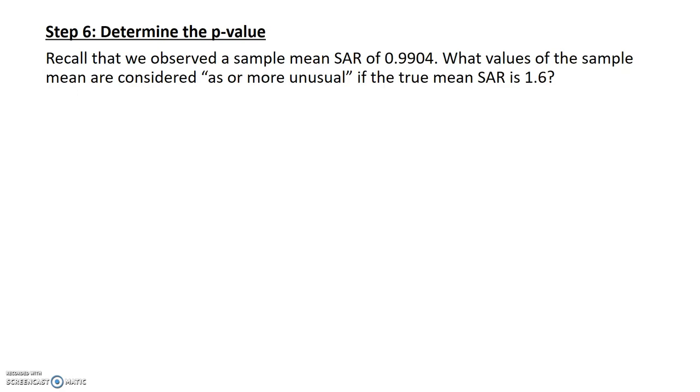In step six, I get to determine the p-value. Recall that the sample mean for the data was 0.9904. What values of the sample mean are considered as or more unusual? I need to know this because I'm going to have to determine the p-value.